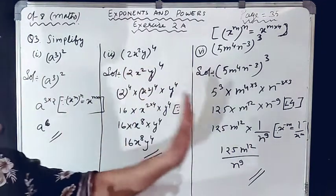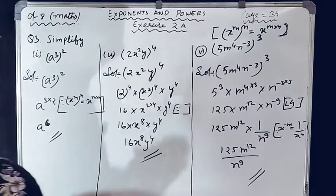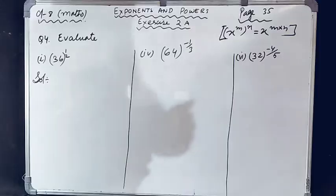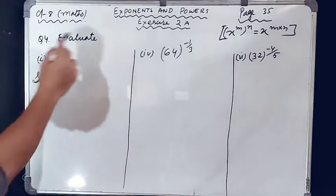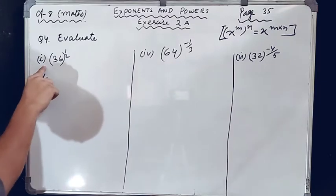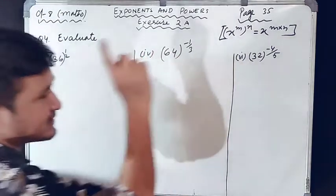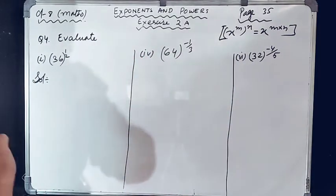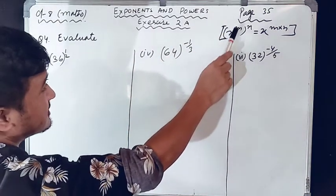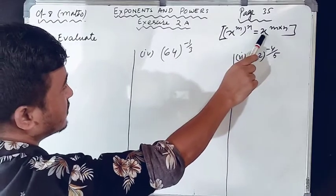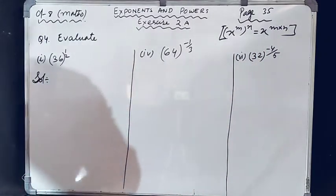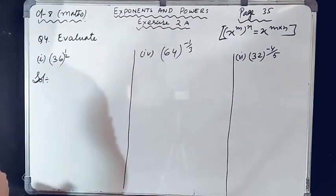I have done questions 1, 2, and 6 from question number 3; the rest is your homework. Now moving to question number 4: evaluate. I will do questions 1, 4, and 6; the rest is your homework. We are using Law 4: x raised to the power m, whole raised to the power n, equals x raised to the power m into n. First question: 36 raised to the power 1 by 2.